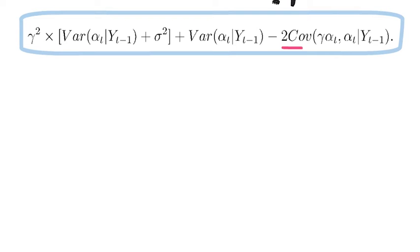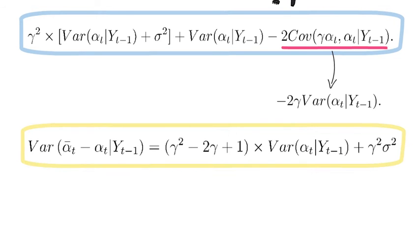The covariance term coincides with minus 2 gamma times the conditional variance of alpha t conditional on YT-1. Grouping terms, we can rewrite the variance of the difference between any linear unbiased estimator and the true value as gamma-squared minus 2 gamma plus 1 multiplied by the conditional variance of alpha t plus gamma-squared times sigma-squared.